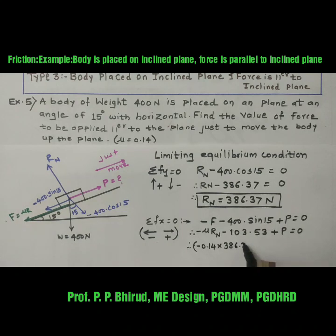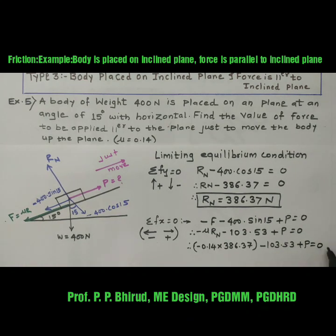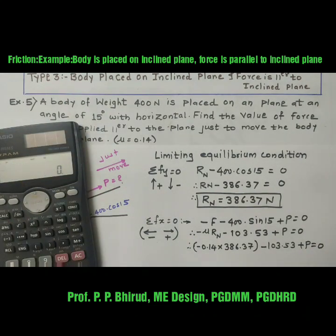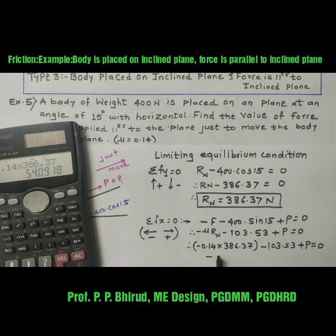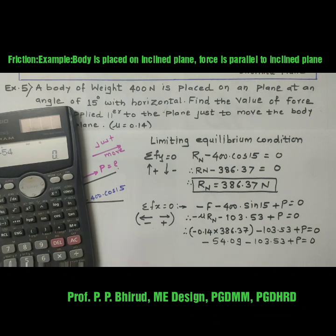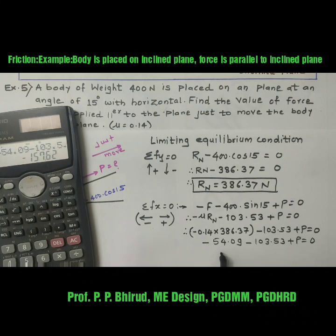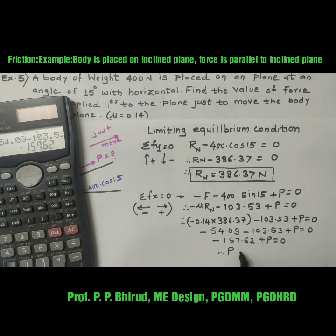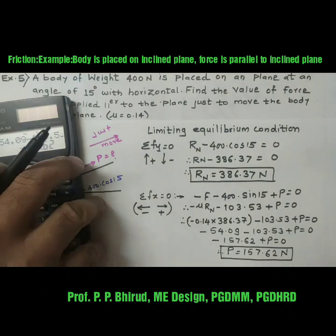By calculating, 0.14 into 386.37 gives 54.09. So minus 54.09 minus 103.53 plus P equals 0, giving minus 157.62 plus P equals 0. Therefore, P equals 157.62 Newton. This is the force required to move the body in the upward direction.